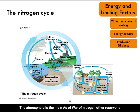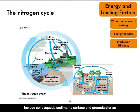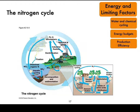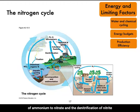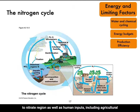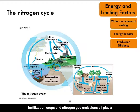The atmosphere is the main reservoir of nitrogen. Other reservoirs include soils, aquatic sediments, surface and groundwater, as well as biomass. Biotic and abiotic fixation of nitrogen, the nitrification of ammonium to nitrate, and the denitrification of nitrate to nitrogen — as well as human inputs including agricultural fertilization, crops, and nitrogen gas emissions — all play a role in the nitrogen cycle.